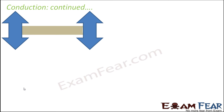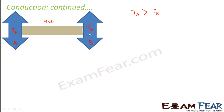Let us take a simple example to understand conduction. Suppose we have two objects, object A and object B, connected to each other through a rod — so they are all conductors. Object A is at temperature T_A and object B is at temperature T_B, and the temperature of A is greater than the temperature of B, meaning object A is hotter than object B. As per conduction, whenever there is a temperature difference, heat transfer will take place in solid objects. So heat transfer should take place from object A to object B.